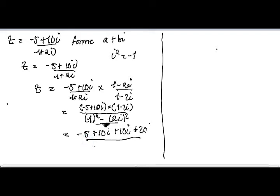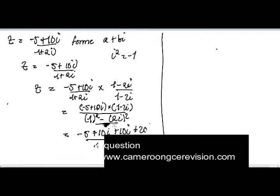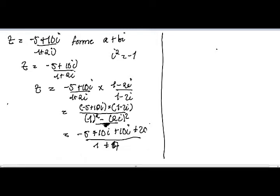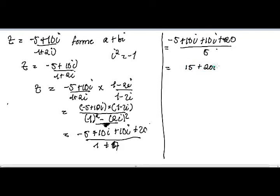All divided by 1 plus 4, which equals 5. We know that (1 − 2i)(1 + 2i) gives us 1 minus (2i)² = 1 minus 4(−1) = 1 + 4 = 5. So our expression becomes (−5 + 10i + 10i + 20) divided by 5, which simplifies to (15 + 20i) divided by 5, giving us 3 + 4i.